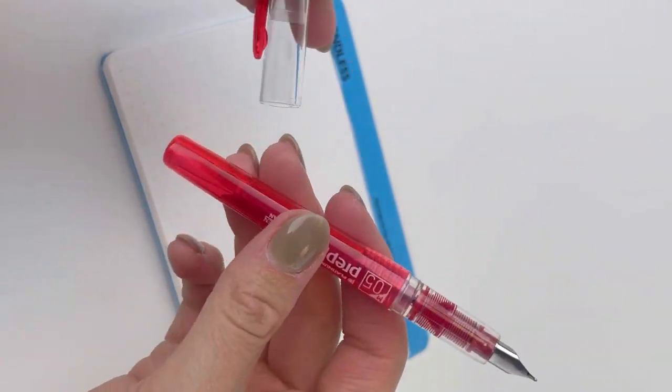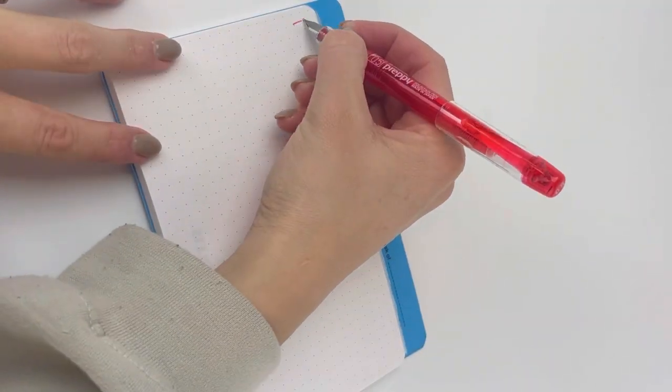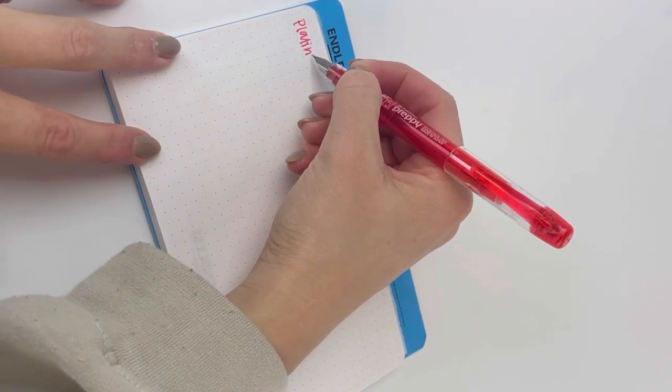They're cartridge converters. They each come with a cartridge included in the pen that coordinates with the color of the pen, and they come in a few different nib sizes.